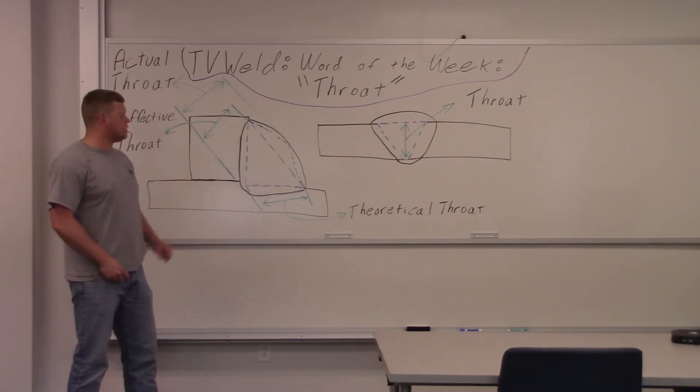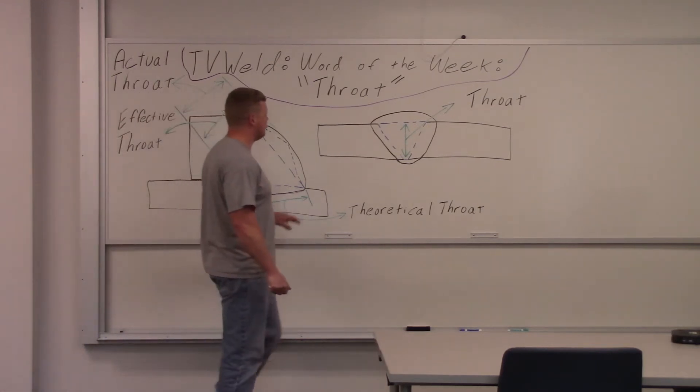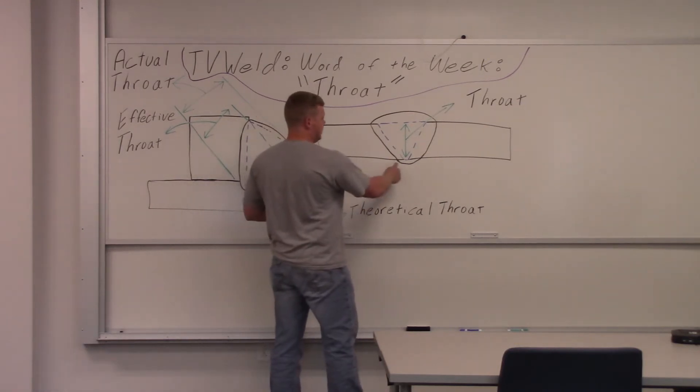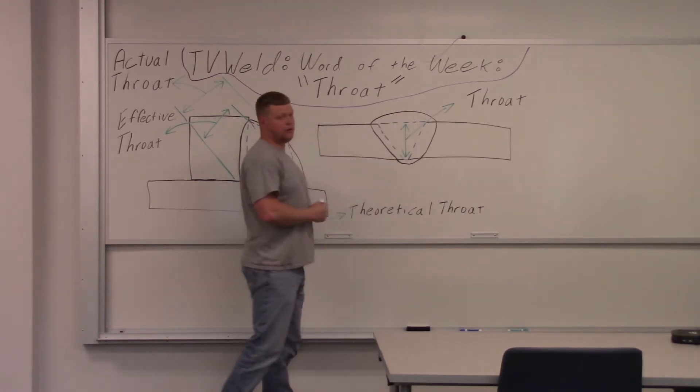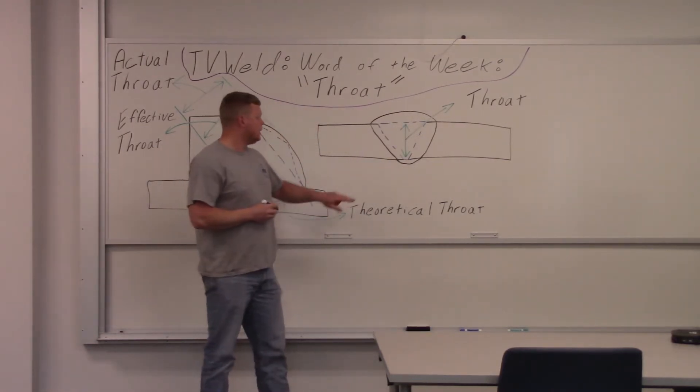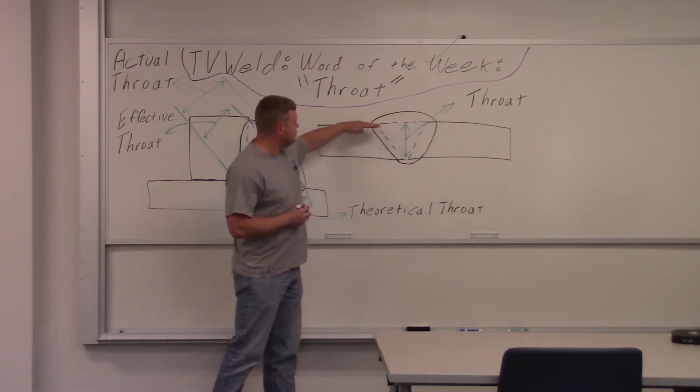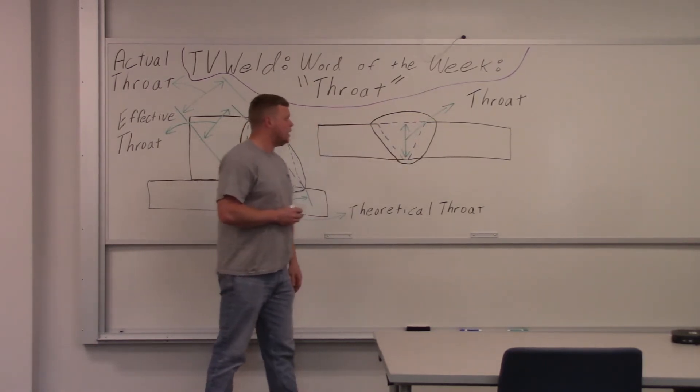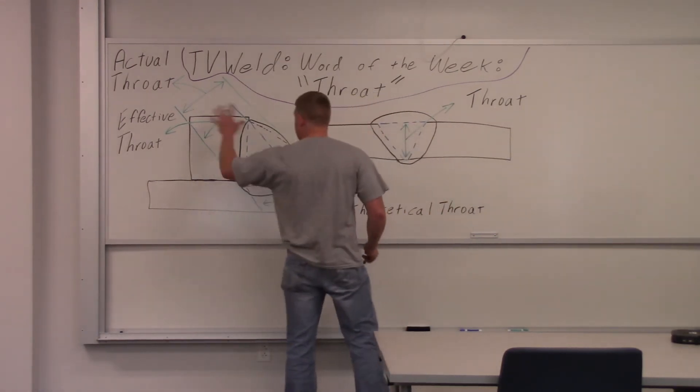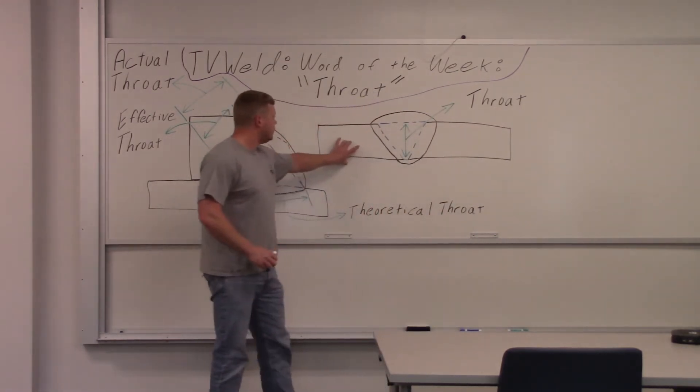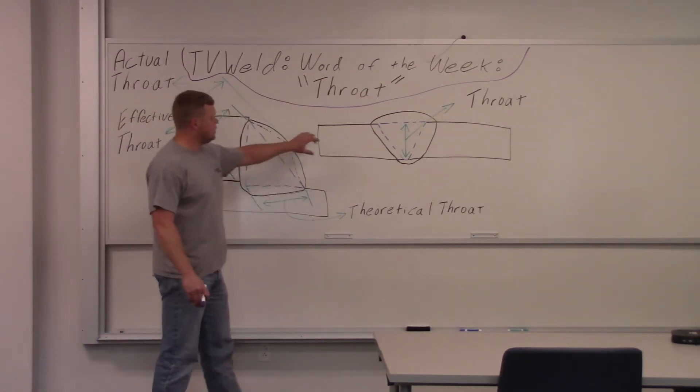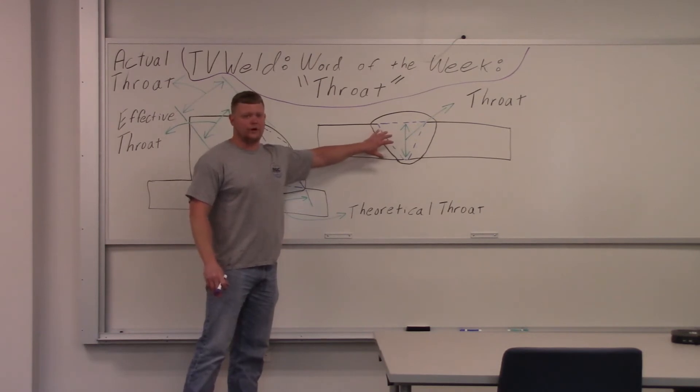So let's go over here to this groove weld over here, or groove joint. Throat, it's just the middle. They don't take into the root convexity or the face reinforcement. The throat of a groove weld is just right here where the theoretical line goes at the top and the bottom there. So this is called your throat. They don't have these three designations for a groove weld. So typically when you're thinking of throat, you're thinking of this right here. Because your depth of penetration is going to give you all your strength right here in this groove weld anyways.